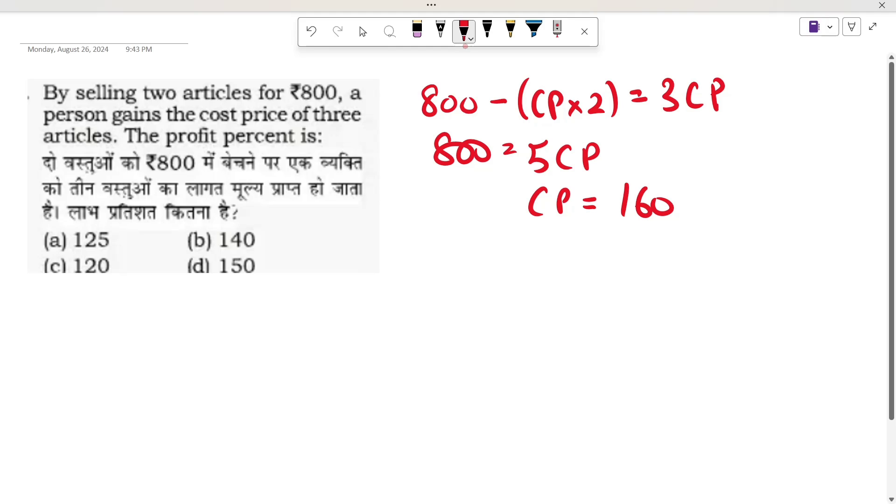If we get CP, what do we need to calculate? The profit percent. That means if I sell two articles for 800, what is the cost price? That is 320. But what is my gain? That would be 480.